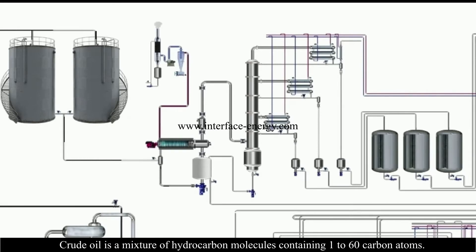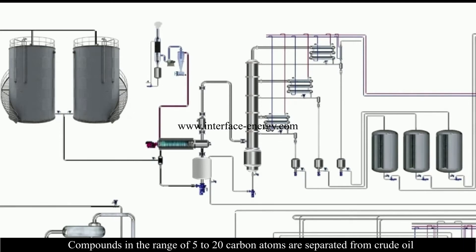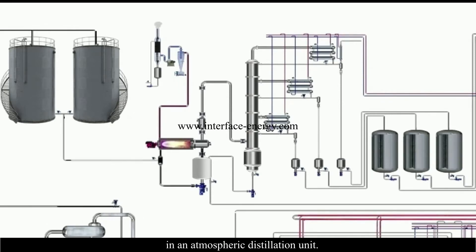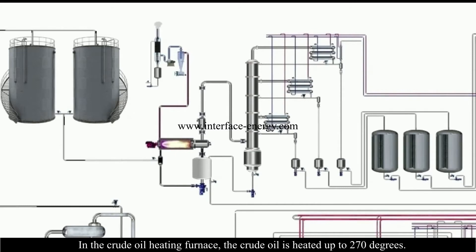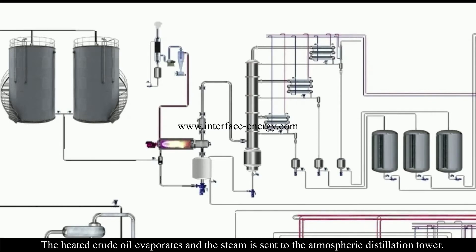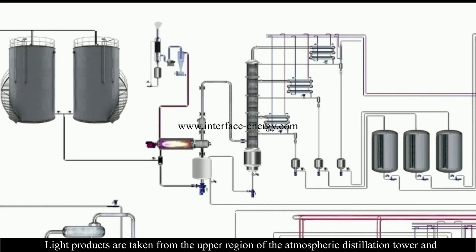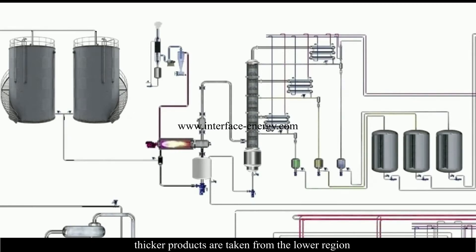Crude oil is a mixture of hydrocarbon molecules containing 1 to 60 carbon atoms. Compounds in the range of 5 to 20 carbon atoms are separated in the atmospheric distillation unit. The crude oil is heated up to 270 degrees in the heating furnace, causing it to evaporate. The steam is sent to the atmospheric distillation tower, where light products are taken from the upper region and heavier products from the lower region.